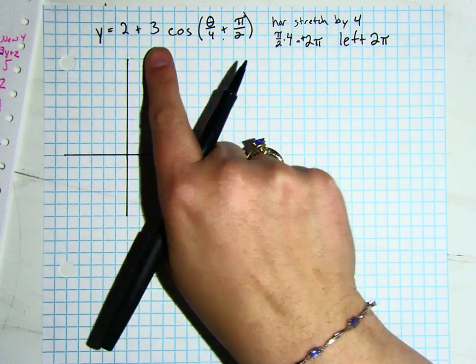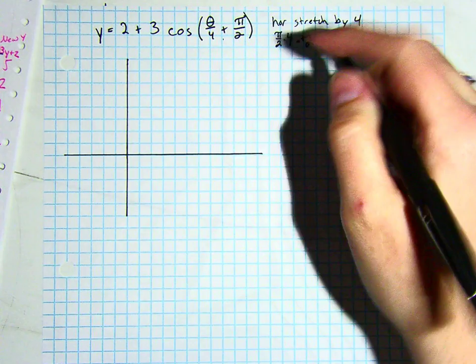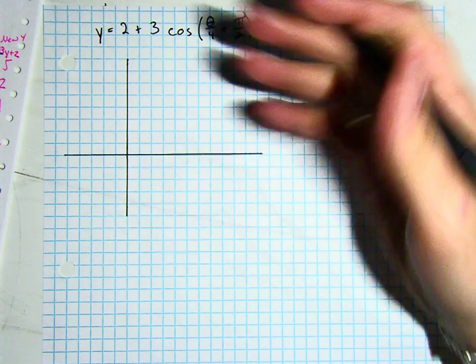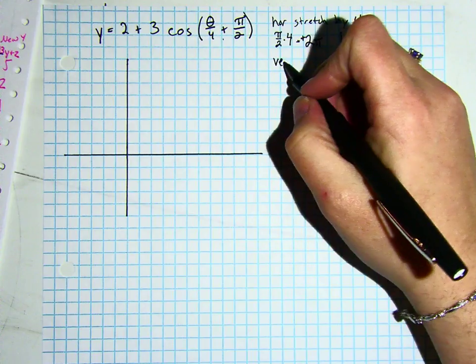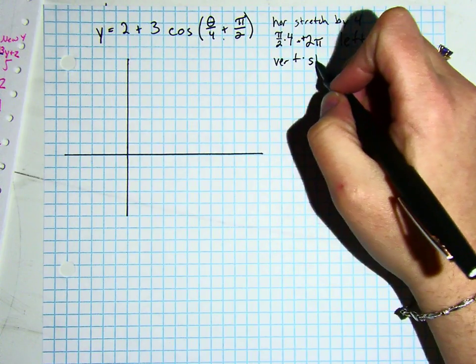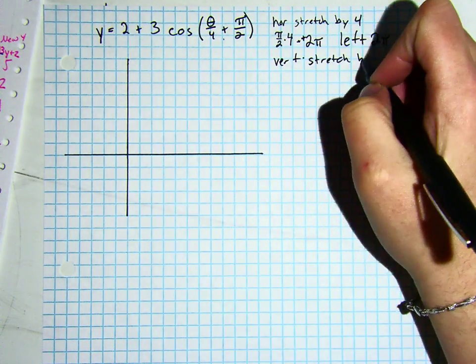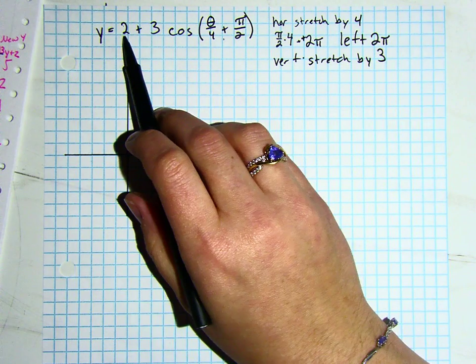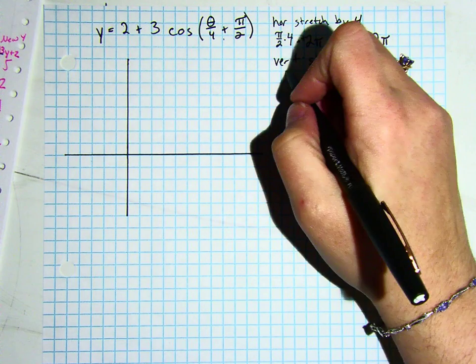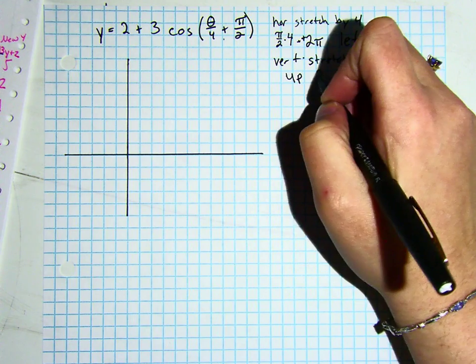Now we can work outside of the function. We have a 3, so outside works exactly as we think, so we are going to vertically stretch by a factor of 3. A plus 2 on the outside means we are going to go up 2.